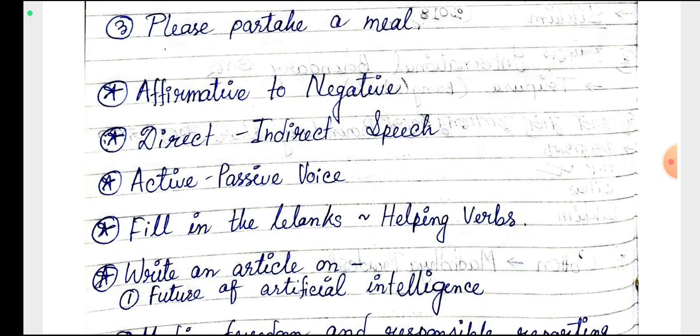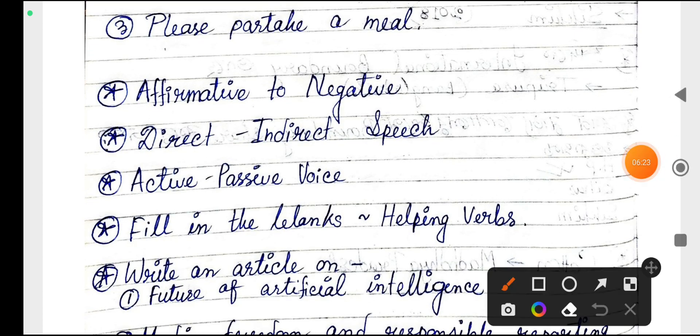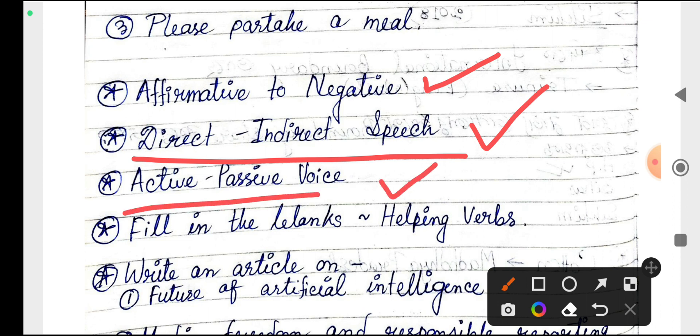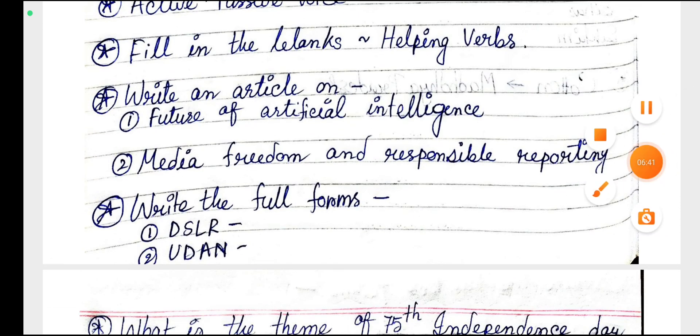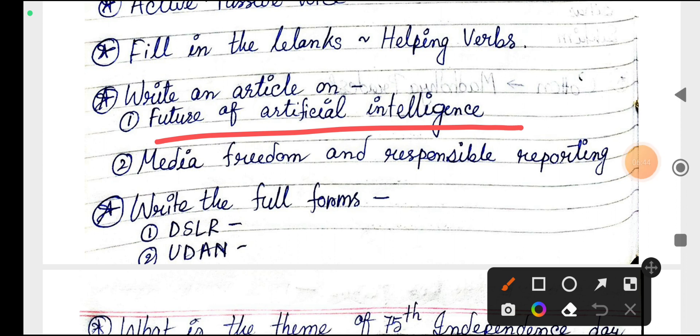Next, affirmative to negative transformation of sentences, direct and indirect speech, active to passive voice, fill in the blanks with helping verbs. Write an article on future of artificial intelligence and media freedom and responsible reporting.